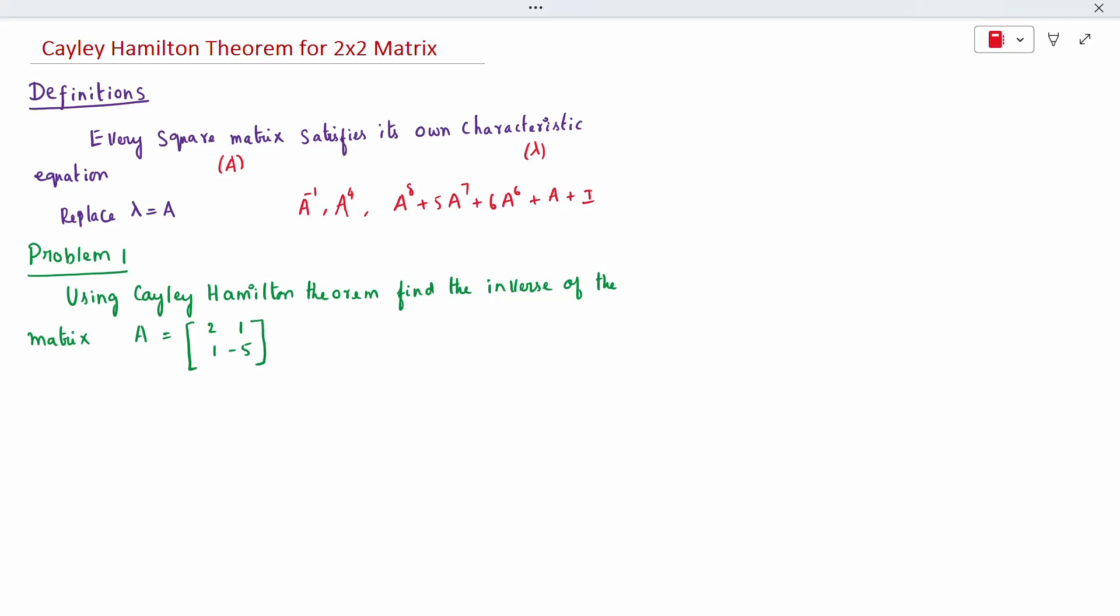Normally, how we do the inverse in school means 1 by adjoint into the matrix we do. But we are not going to do that. They mentioned Cayley-Hamilton theorem. Without using Cayley, you should not do it by the formula. So what I am going to write first,